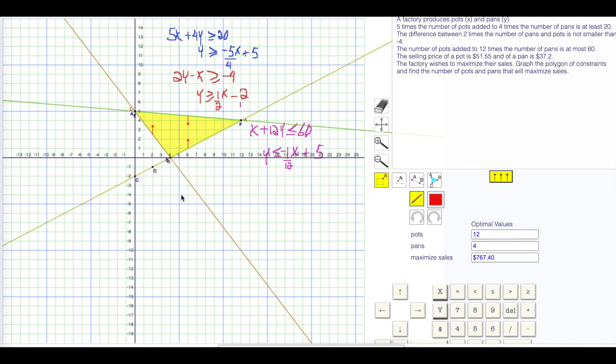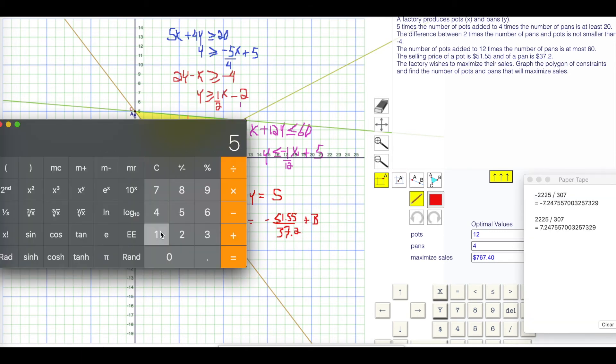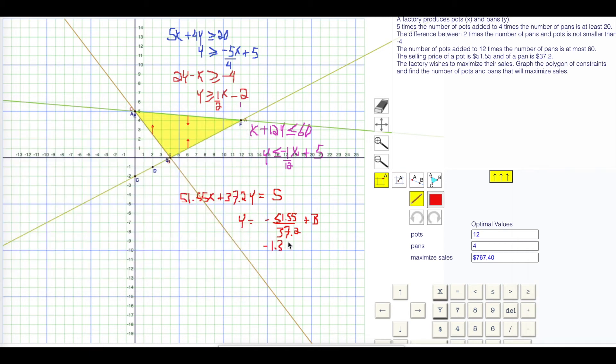About the scanning line. For the scanning line, we have 51.55x. 51.55 times our x value plus 37.20 times the y value is equal to our sales. If I'd subtract the 51.55 and then divide by 37.2, I'm going to get y is equal to negative 51.55 divided by 37.2 plus some b value that we don't care about. Divide that. 51.55 negative divided by 37.2 is negative 1.38. Negative 1.38-ish. That's supposed to be an x here.